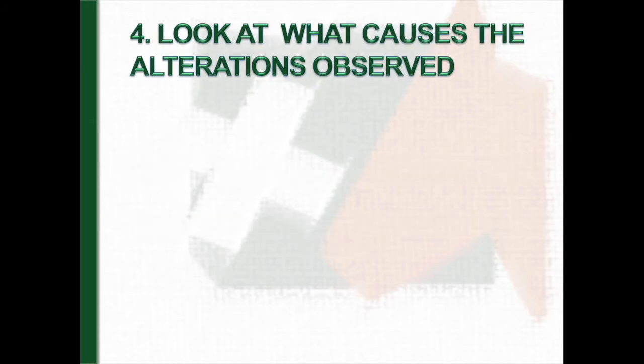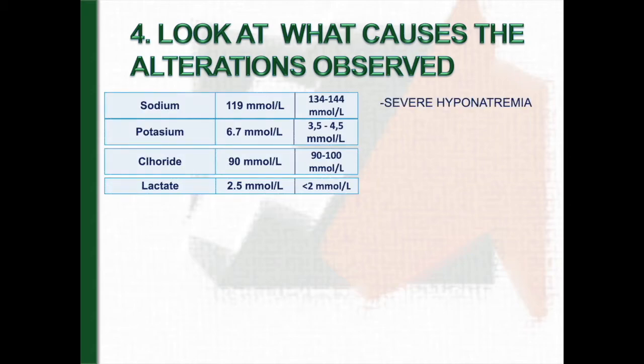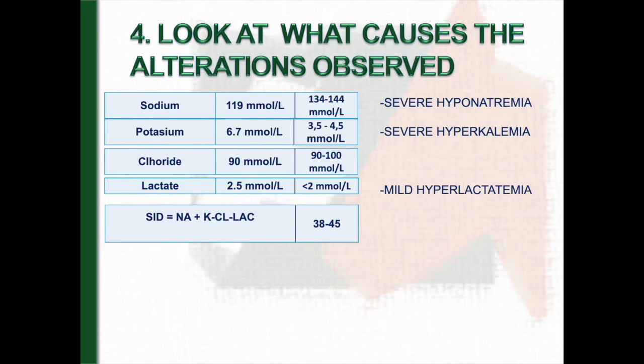The fourth step is to look at the electrolytes, lactate, proteins, and strong ion difference and A-tot. This foal has huge hyponatremia with hyperkalemia and mild hyperlactatemia. Now we can calculate the strong ion difference. The strong ion difference value is clearly decreased due to marked hyponatremia partially measured by the increasing potassium levels.